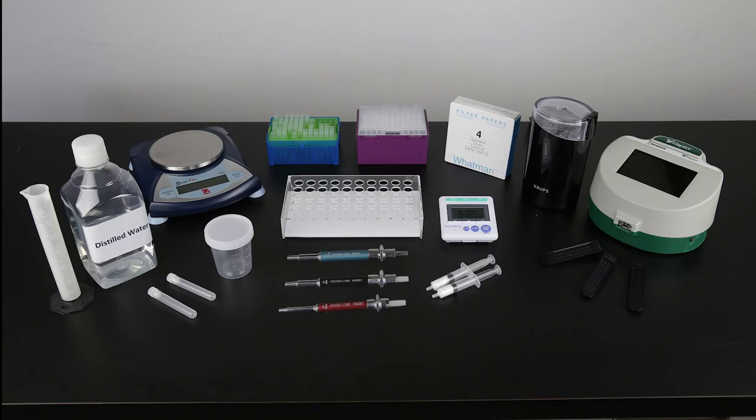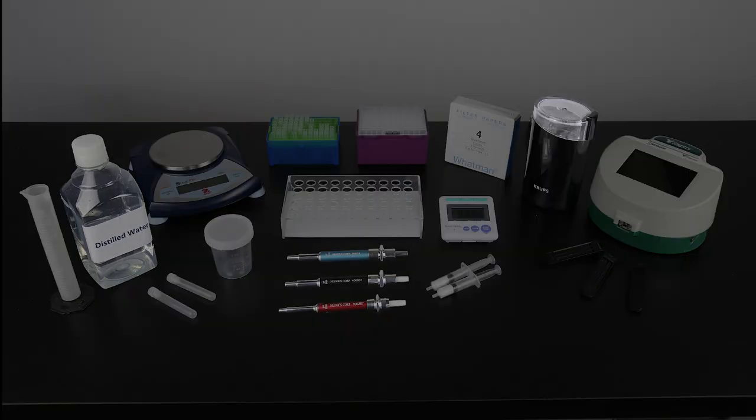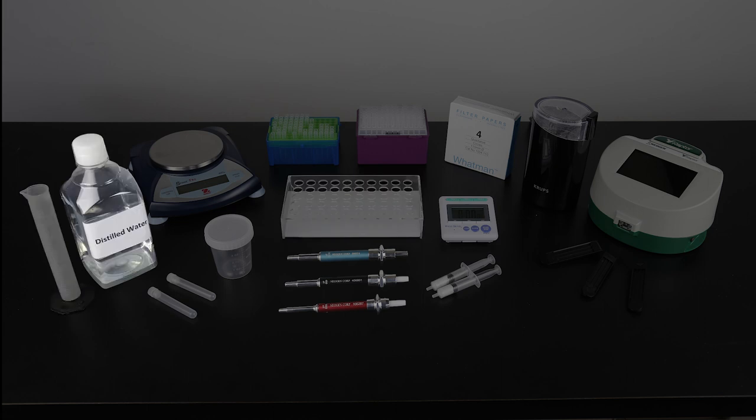To conduct the test, you will also need an Agri-Grind or equivalent grinder, a scale capable of weighing 10 grams accurate plus or minus 0.1 gram, a timer, a Reveal sample cup rack, 50 milliliter graduated cylinder, and distilled or deionized water.